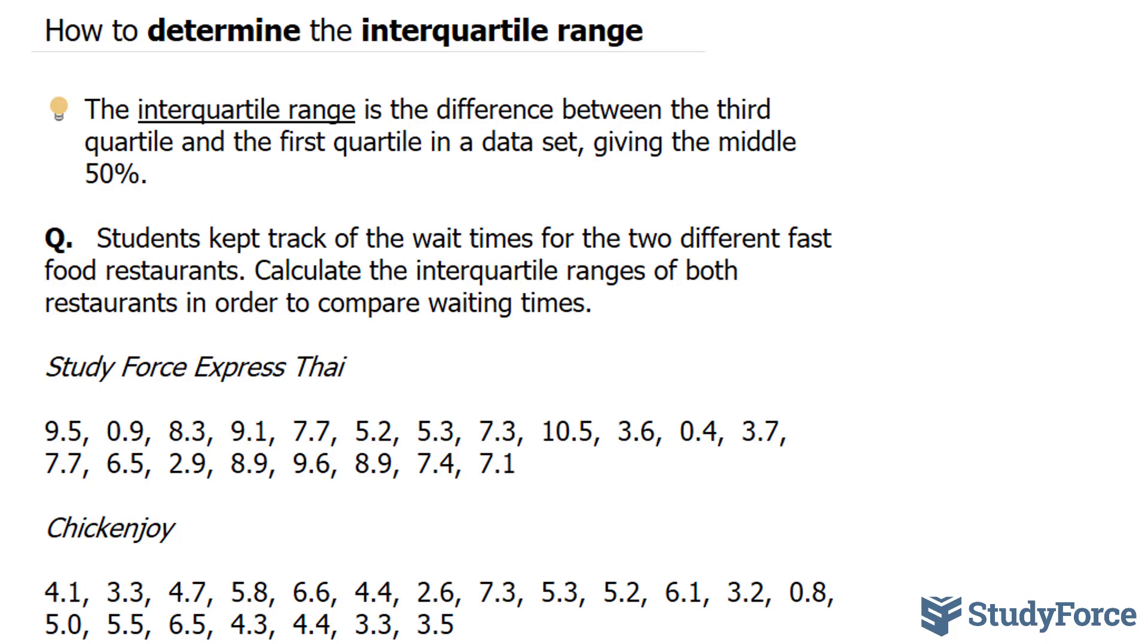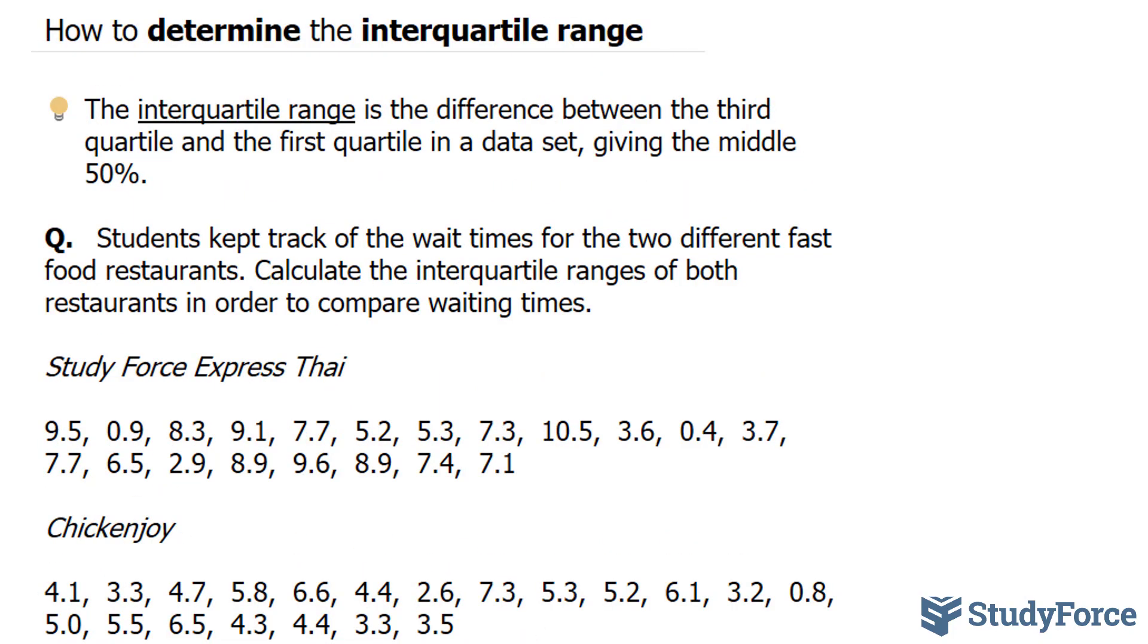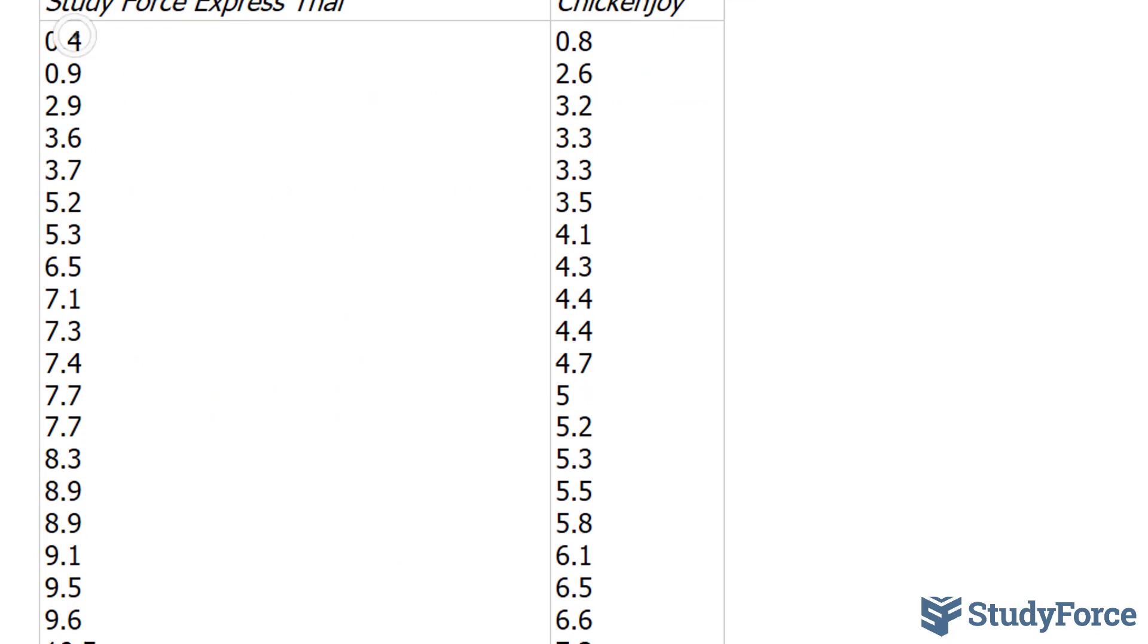What I have to do to complete this question is first list my numbers from least to greatest for both of these restaurants. And if you list these numbers from least to greatest, you should end up with two lists that look like this. Notice that the wait times have been listed from least to greatest. So what we have to do is we have to find the median for both of these data sets.